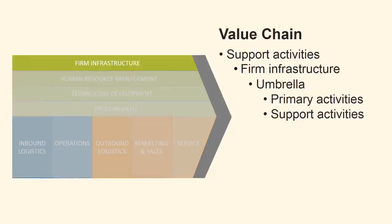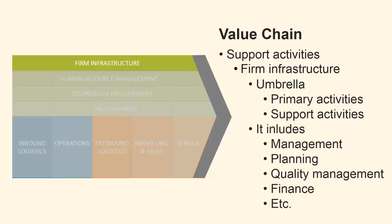Support activity firm infrastructure is a kind of superstructure or umbrella which covers all the other activities. It supports both the primary activities and support activities. It includes the organisation of the company, management, planning, quality management, finance, etc.